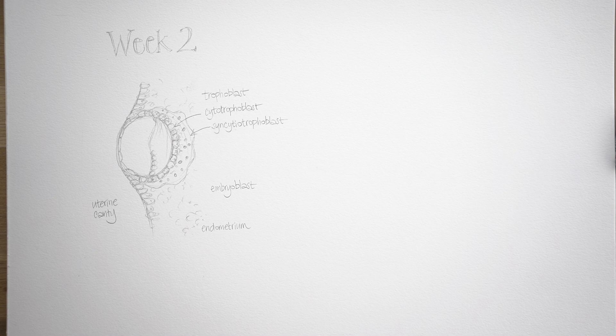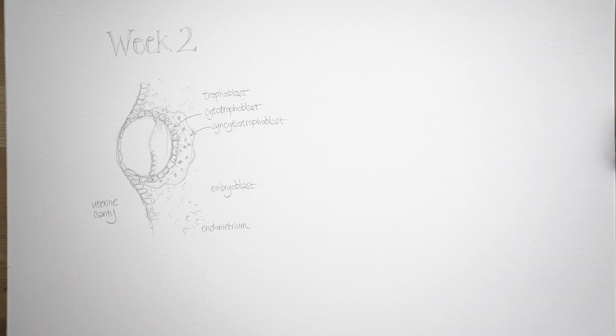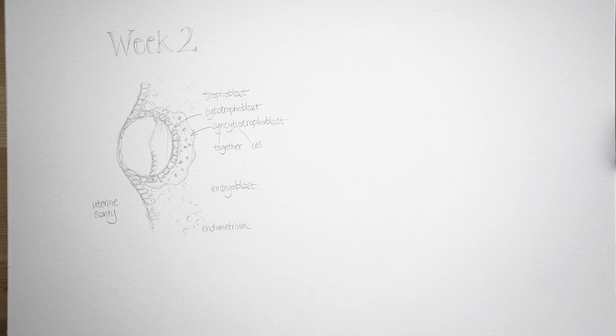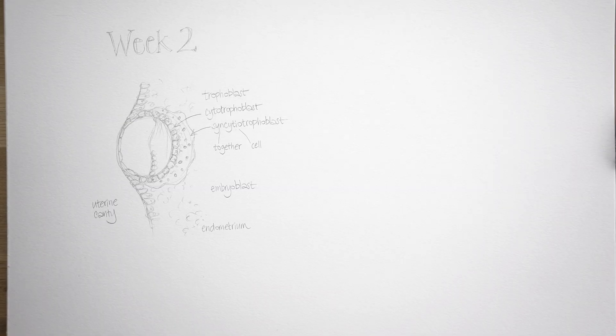And that outer multinucleate mass is called the syncytiotrophoblast. Many of the early embryologists were German, so we end up with these very long words, with essentially lots of words joined together. The trophoblast, if you remember from the first video, means the feeding bud, because it's going to be the part of the embryo that forms the placenta. And then syncytio means together cells, so it kind of describes what it is.